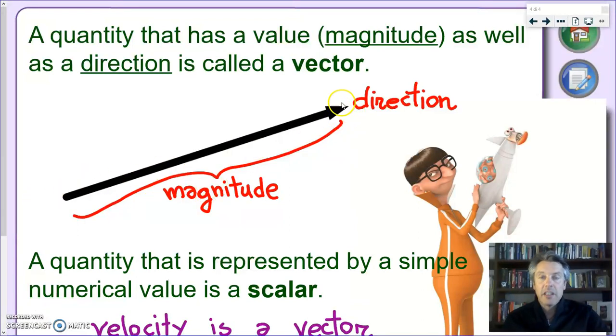So, a longer arrow means a faster speed—sorry, a faster velocity. A shorter arrow will mean a smaller velocity. And this will be important, especially when in a diagram, we're going to have more than one arrow, so we want to compare the values of these velocities.